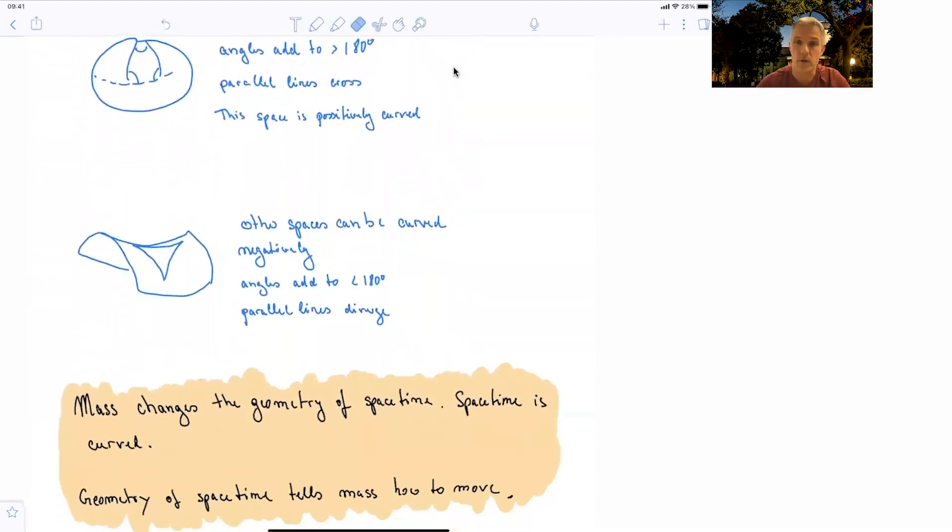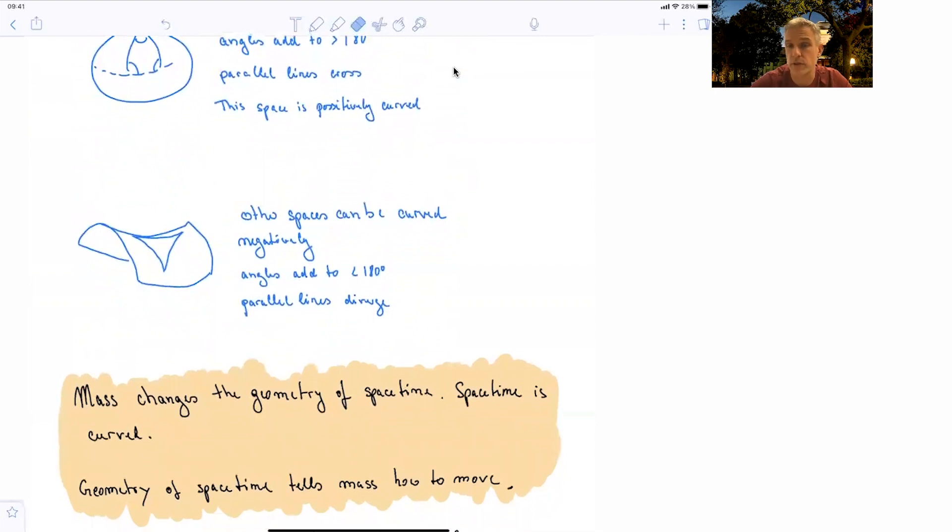So mass has changed the geometry of space time. We just talked about light bending. Because of the change in geometry, light will not go on a straight line anymore, but will bend around massive objects. Space time is curved. Geometry of space time tells us how the masses move.